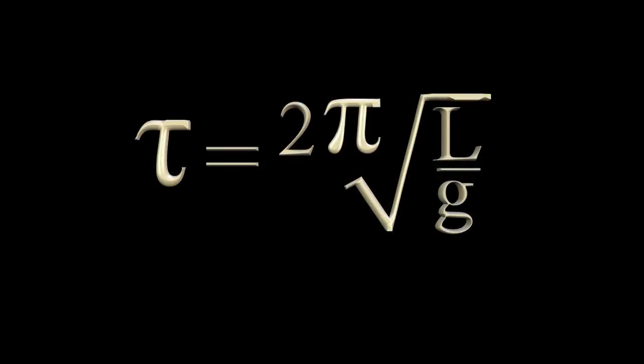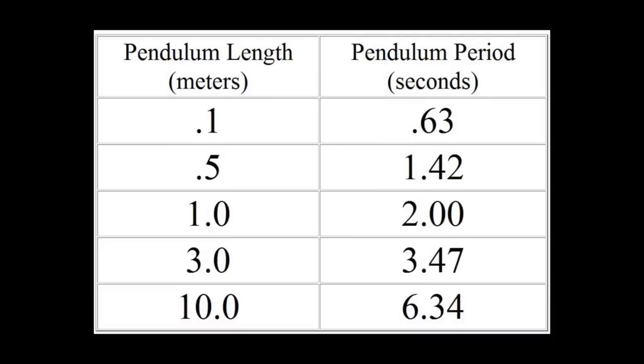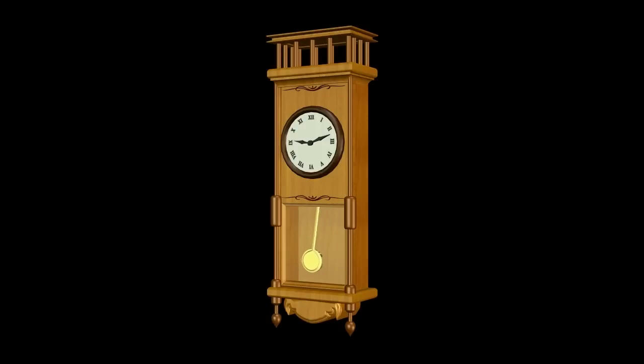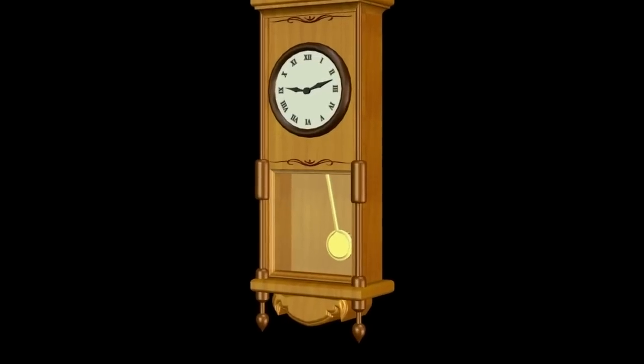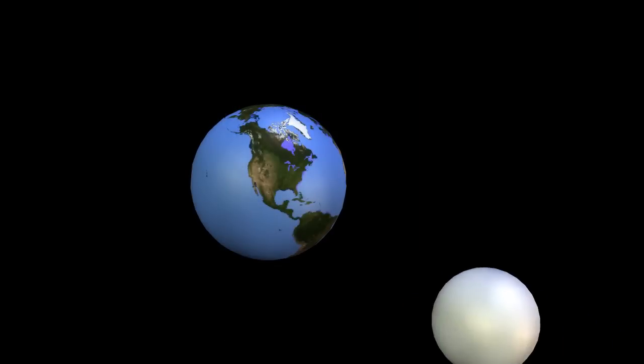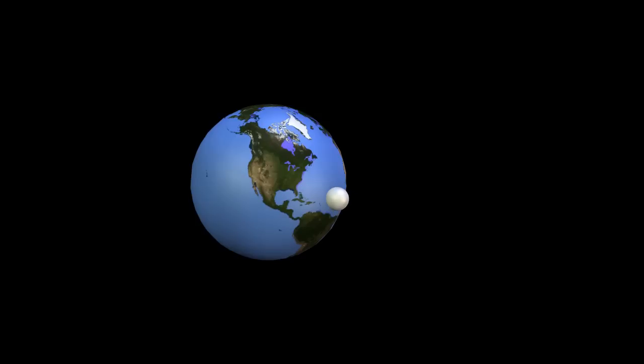We are all familiar with the pendulum and the role it has played in the evolution of clocks. What you may not be familiar with is the role pendulums have played in mapping the Earth's gravitational field. Apparently g, acceleration due to gravity, can vary with location. The Earth's motion and equatorial bulge are a couple of the factors affecting the gravitational field.